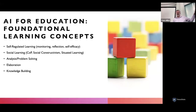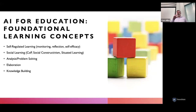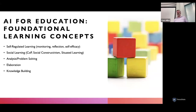A few concepts I'll cover: self-regulated learning — how students monitor their learning, reflect, and build self-efficacy about their own capabilities. Social learning — how we collaborate and learn together. The process of problem solving and learning, how we take initial ideas we don't fully know how to express and elaborate on them. Elaboration helps us expand on ideas, introduce new concepts, and connect them to prior concepts — really an essential part of both learning and communicating effectively. And knowledge building — how we operate in a knowledge-oriented society and workforce.